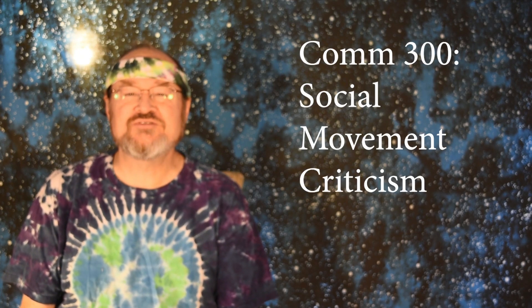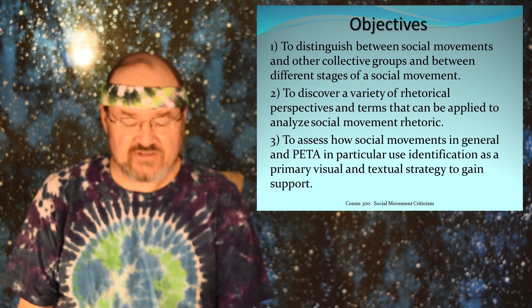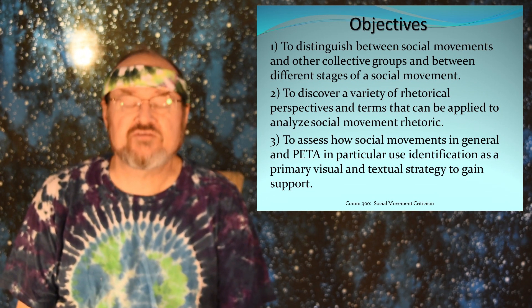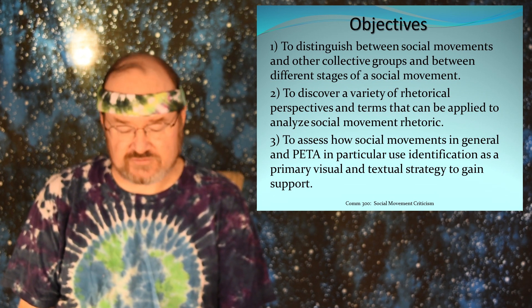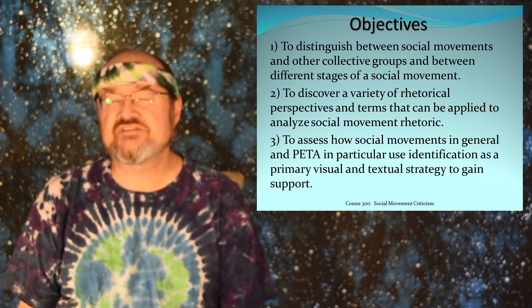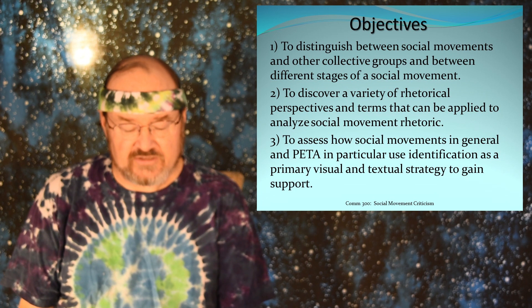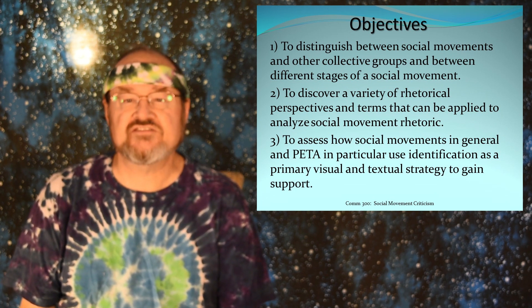Hello and welcome to the COM 300 module on social movements. Our objectives for this module are to distinguish between social movements and other collective groups and between different stages of a social movement. Second, to discover the variety of rhetorical perspectives and terms that can be applied to analyze social movement rhetoric. And third, to assess how social movements in general and PETA in particular uses identification as a primary visual and textual strategy to gain support.